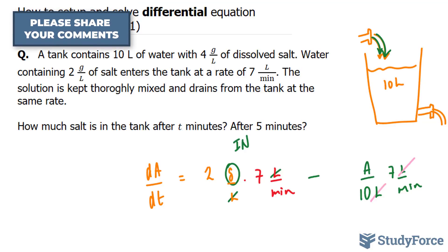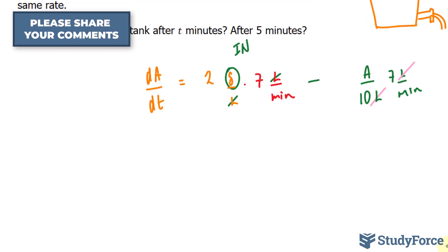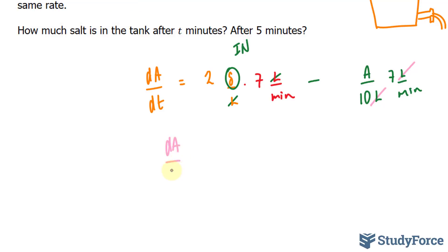So what I'm going to do here is clean this equation up a little bit. Where I have dA over dt is equal to 2 times 7 is 14. I won't include the units anymore. Minus 7A over 10. And I'll try to get the general solution for this differential equation.